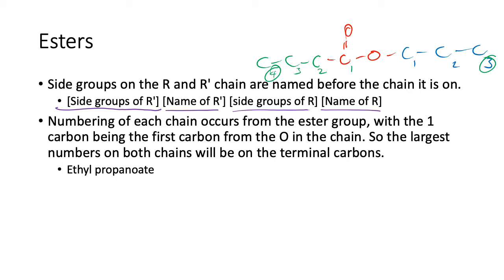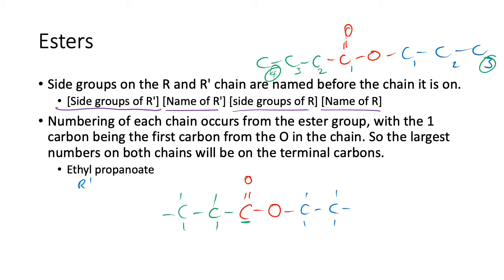Let's draw ethyl propanoate. Draw the ester group, then the R' group — ethyl, so one, two carbons. Then propanoate on the other side: but remember that the ester carbon is number one, so you only need two more carbons to make three total — one, two, three. That's ethyl propanoate with the R' and R groups.